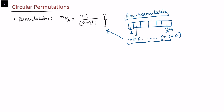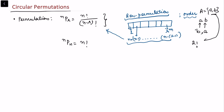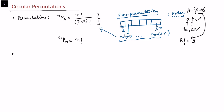In row permutation, order does matter. To explain this, take a simple example with two elements a and b. It is possible to place a at the first position and b at the second, or b at the first position and a at the second. For two elements there are two factorial, that is 2, possible permutations. But this is not the case for circular permutation.